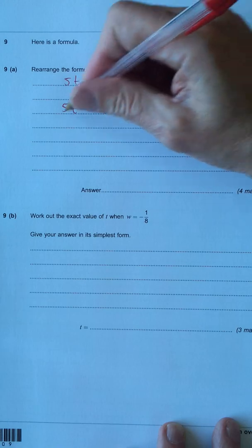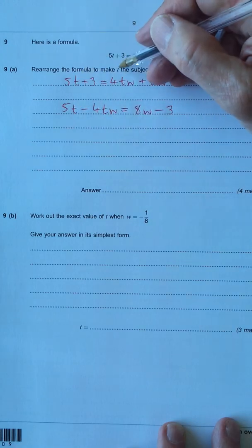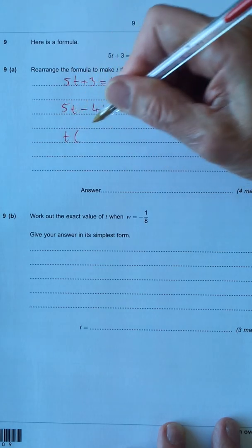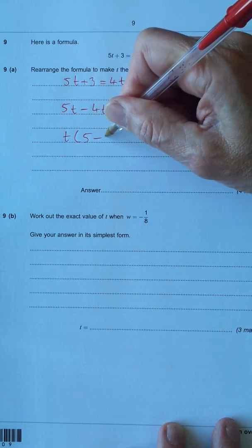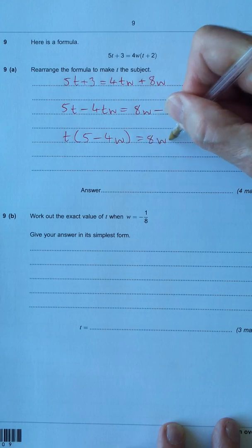Now this is the bit here. I'm going to factorize the t's out because that's what we want on its own to make t the subject. So we're left with t, then 5 minus 4w equals 8w minus 3.